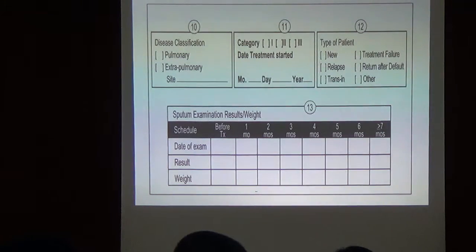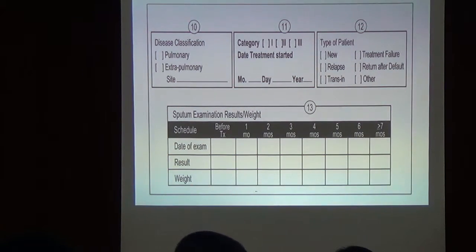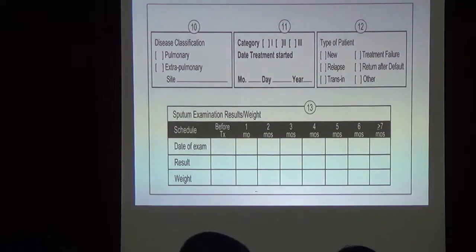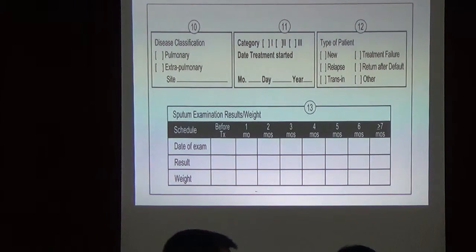The update in the new MOP is that only two sputum samples are now collected — not three. It can be done as spot then home: one collected at the center, and one collected at home first thing in the morning after waking. If the patient cannot return, both can be collected as spot samples with at least one hour in between, to avoid making the patient travel back and forth.